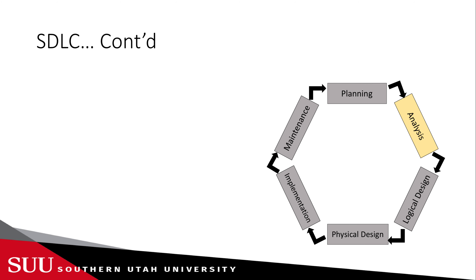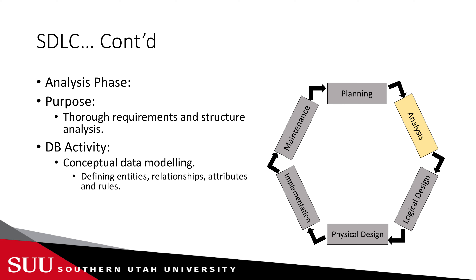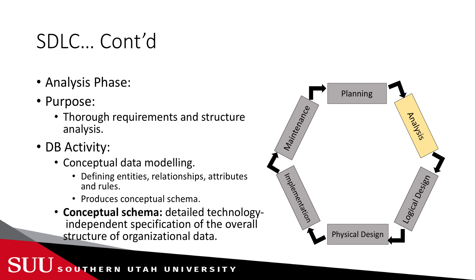The second phase is analysis. In the analysis phase, we want to do a thorough requirements and structure analysis — we gathered requirements in the planning phase, and now we analyze them. In terms of database activity, it involves conceptual data modeling: defining entities, relationships, attributes, and rules. We produce what we call a conceptual schema, which is a detailed, technology-independent specification of the overall structure of organizational data.